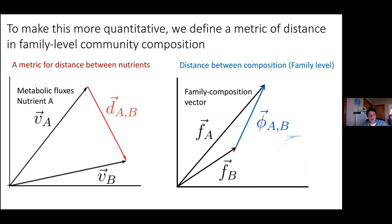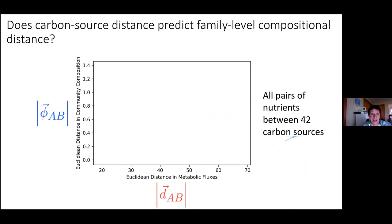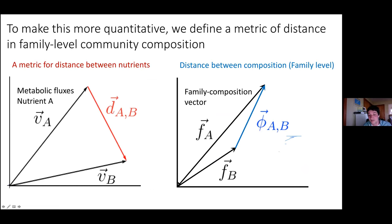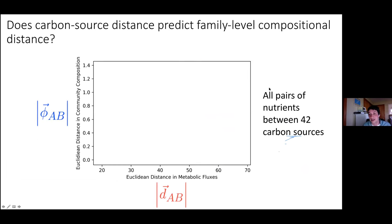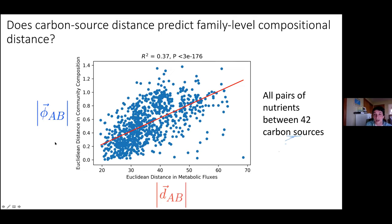Another question is whether the distance between nutrients can explain the distance between community compositions at the family level. We plotted Euclidean distance in metabolic fluxes against Euclidean distance in community composition, and find a fairly decent correlation between the two. This is a crude measurement, and we are now trying to extract more informative components from the metabolic space. We've also been using machine learning algorithms to see if it's possible to predict the communities assembled in a new carbon source from a new inoculum, doing cross-validation. We find that a very simple machine learning model is capable of predicting family-level composition, especially for Enterobacteriaceae and Pseudomonadaceae, and even better for functional groupings of fermentative versus respiratory bacteria.